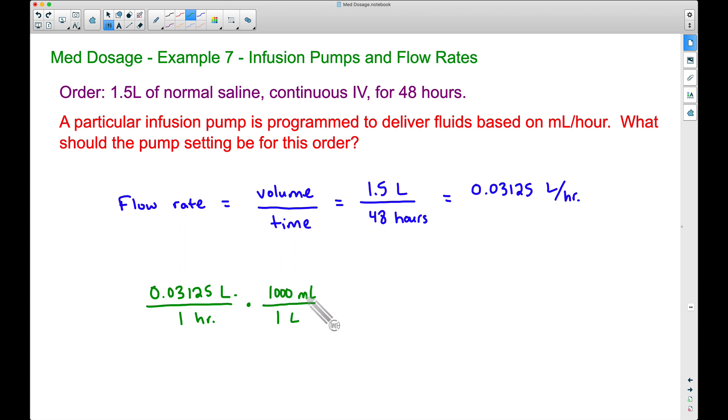1,000 milliliters is the exact same thing as one liter, but notice with the dimensional analysis we can cancel out our liters, those two words there, and now when we multiply this, 0.03125, if we multiply that by 1,000,